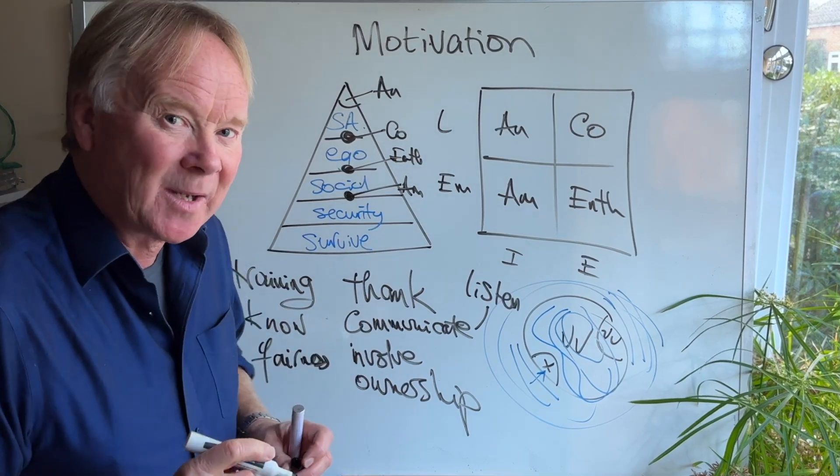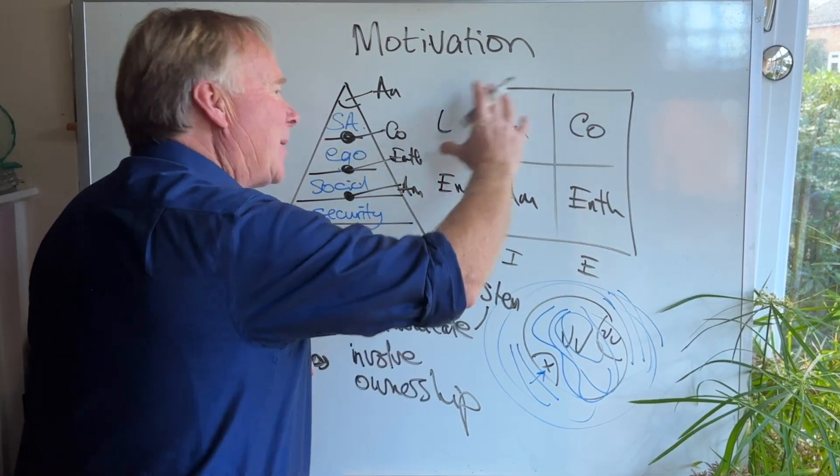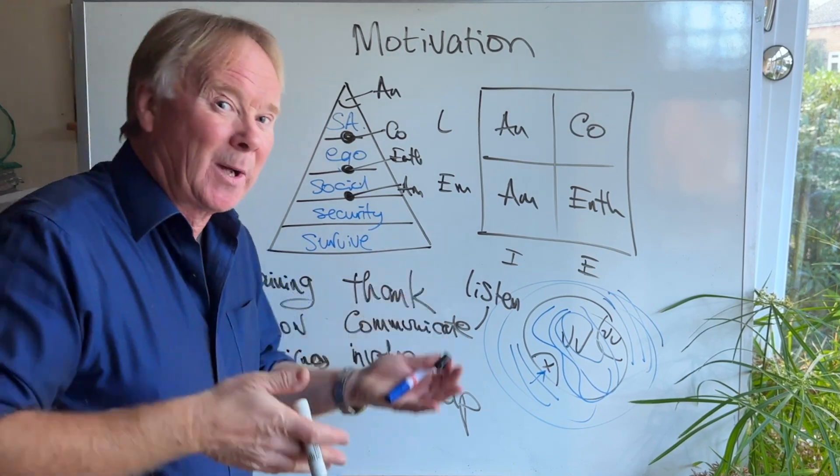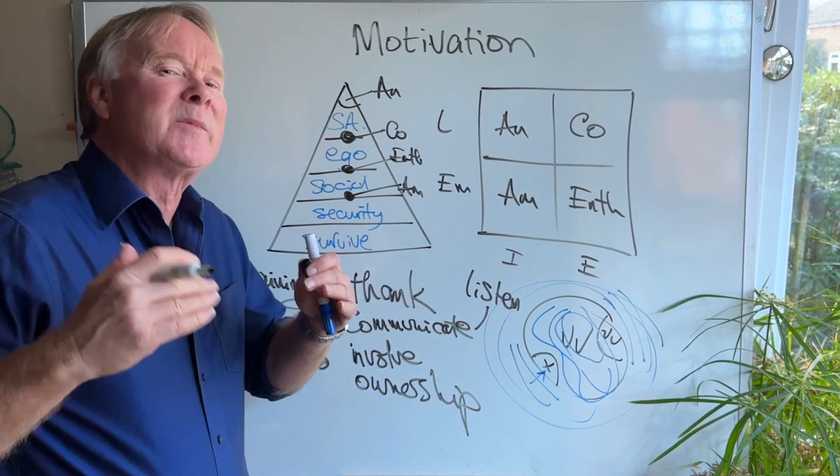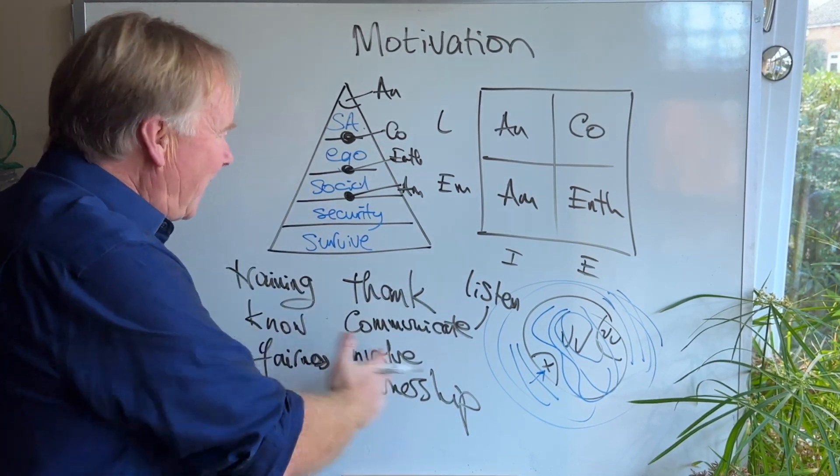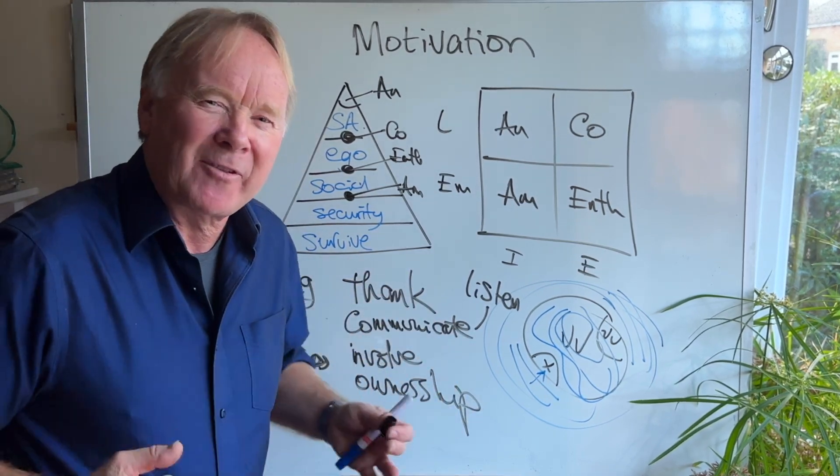And then I think my final tip is fairness. Try to treat everybody the same. Now, I know that means adapting to their personality, but don't have favorites. Some people may need more help or less help, but you're giving them the same amount of help relative to their ability level. So try to be as fair as you can and try to be the same every day.